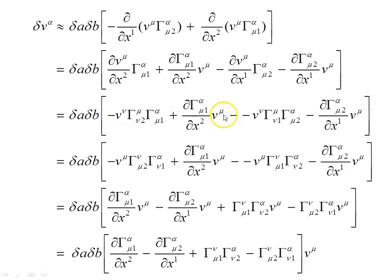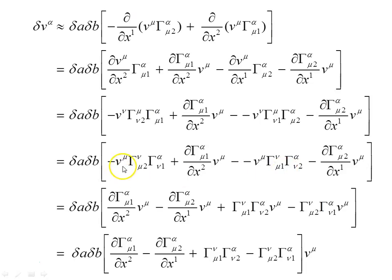We now want to factor out the vector components v_mu. We have v with contravariant index mu appearing in several terms, but the dummy indices need to match. We can freely interchange dummy indices, so we swap the mu labels in two of the terms. After swapping, a double minus becomes a plus. Now all terms have the common factor v_mu, which is factored out, and we're left with the area of the loop times the expression in square brackets times v_mu.